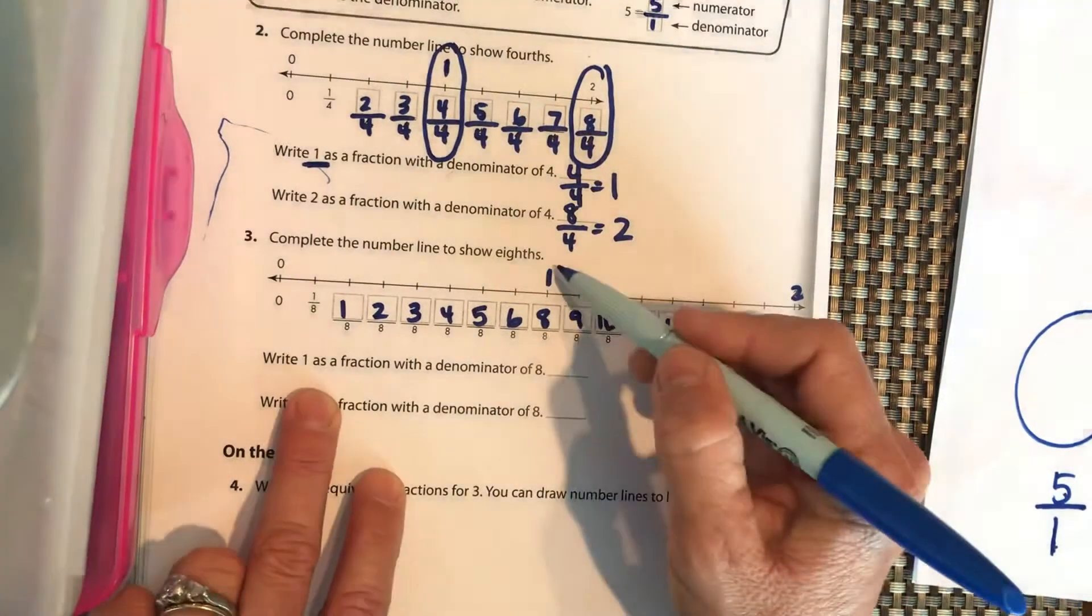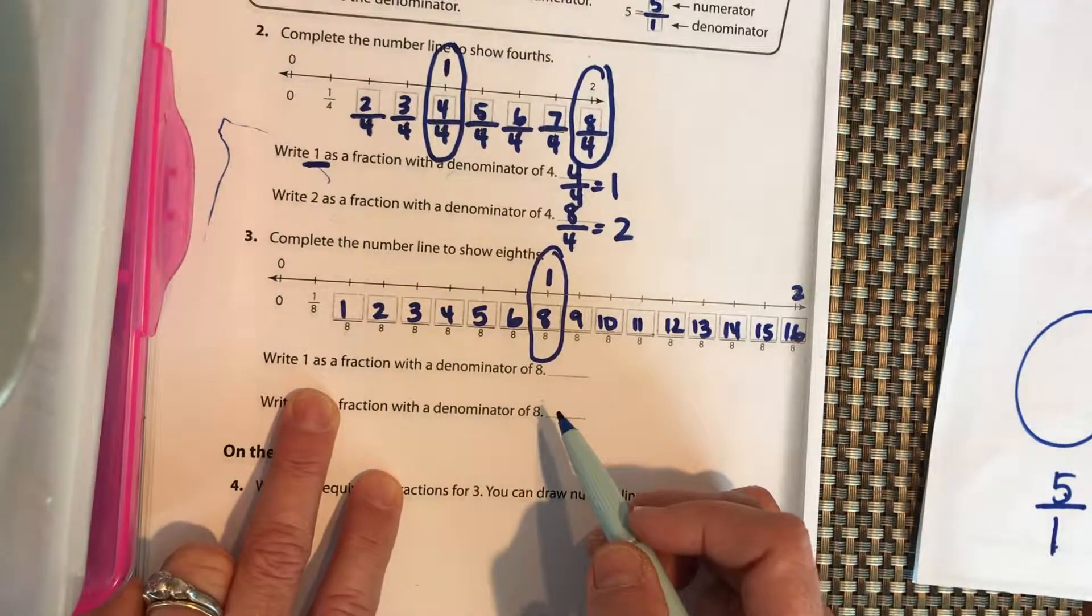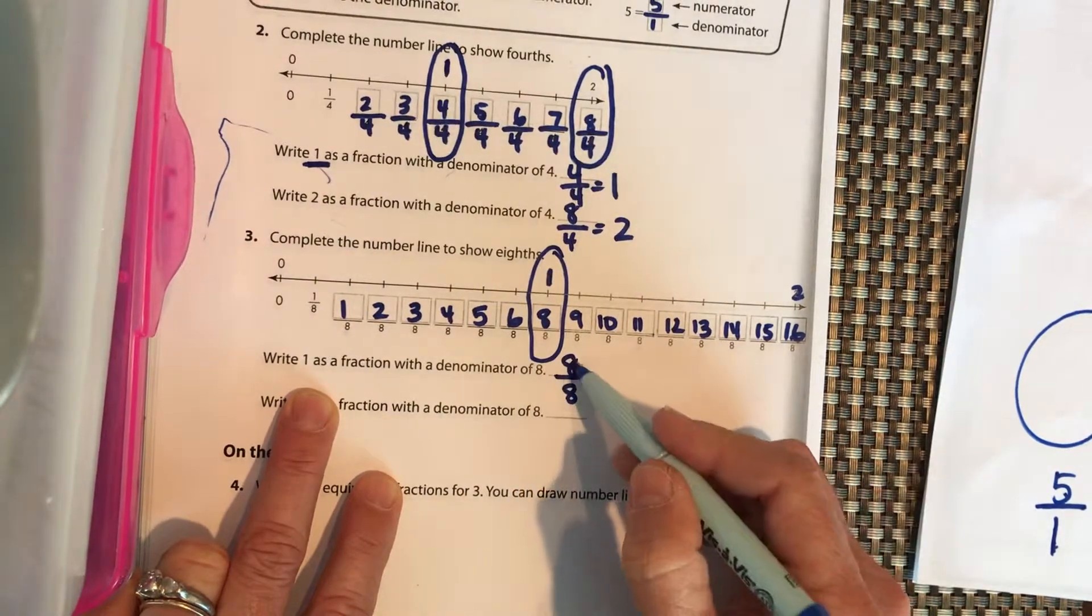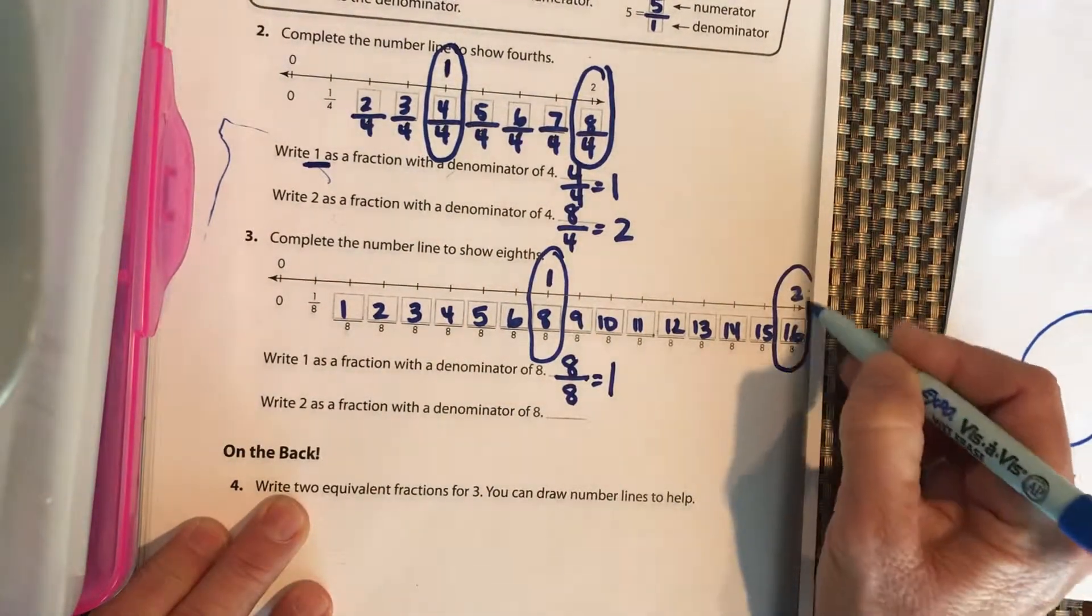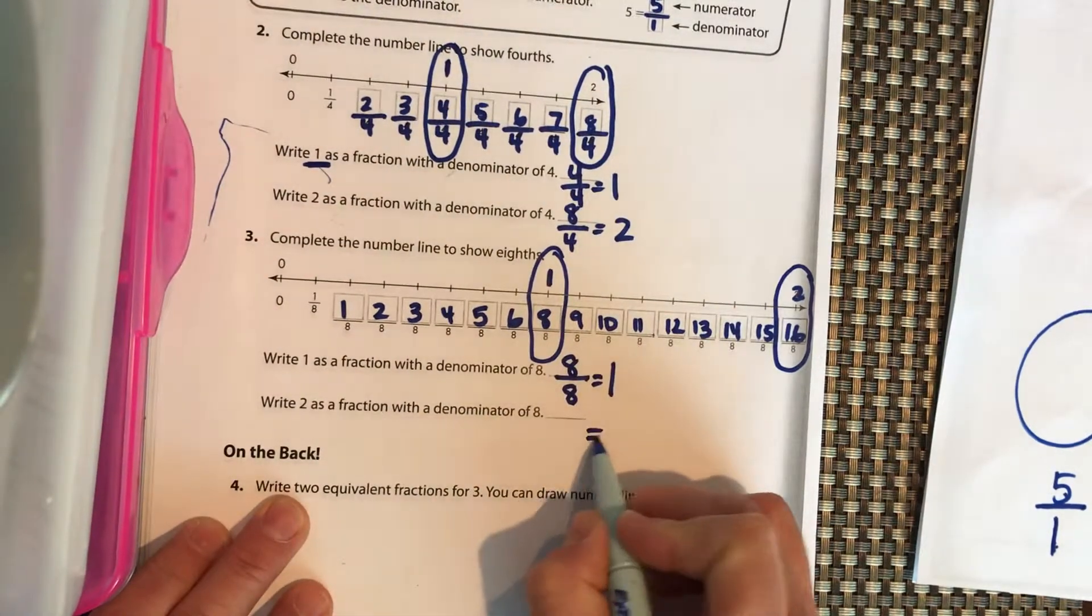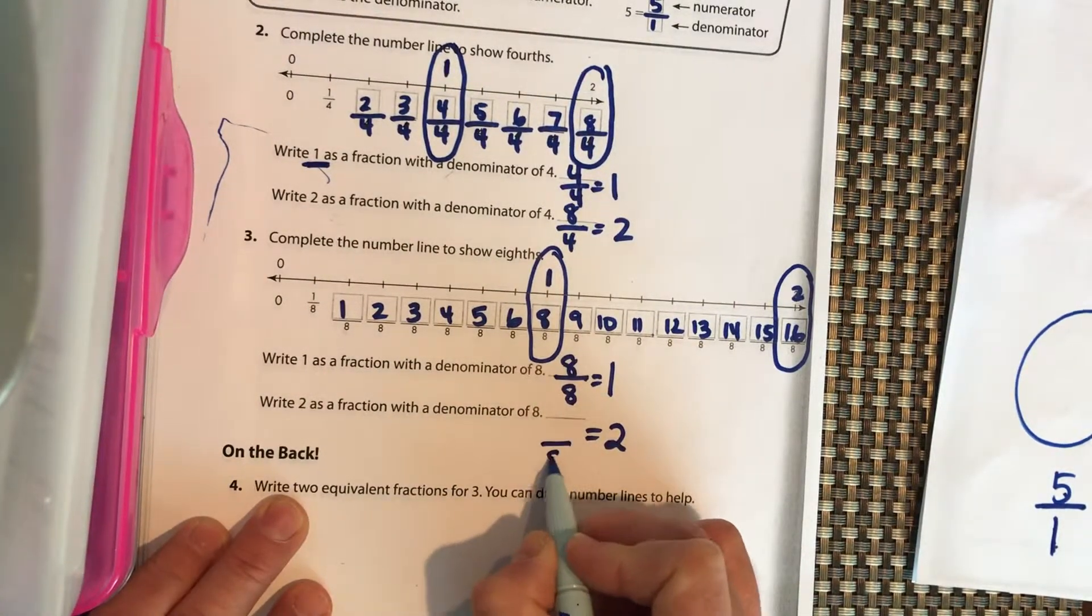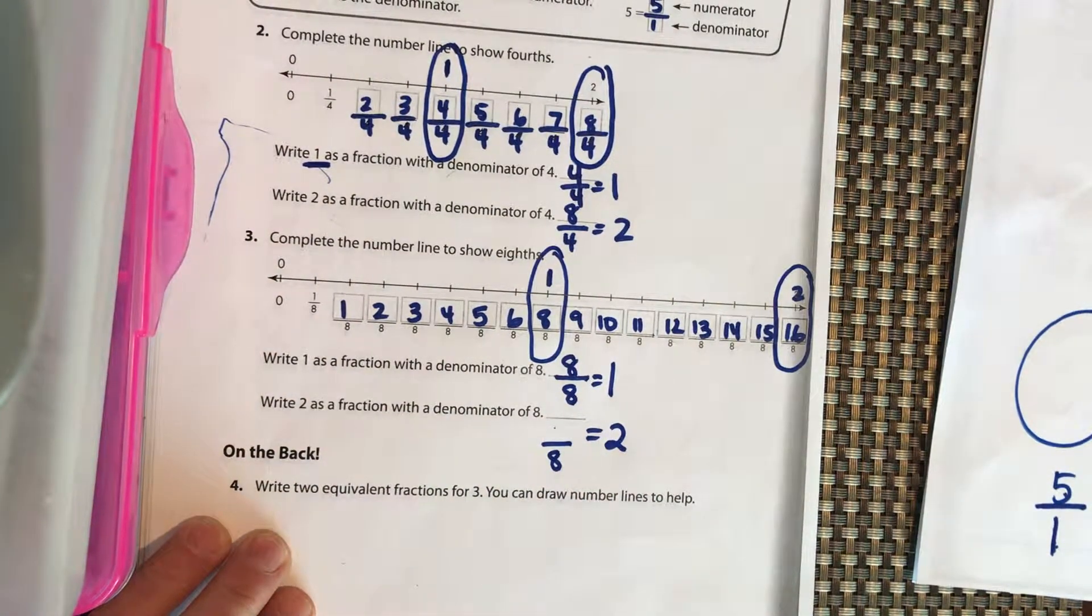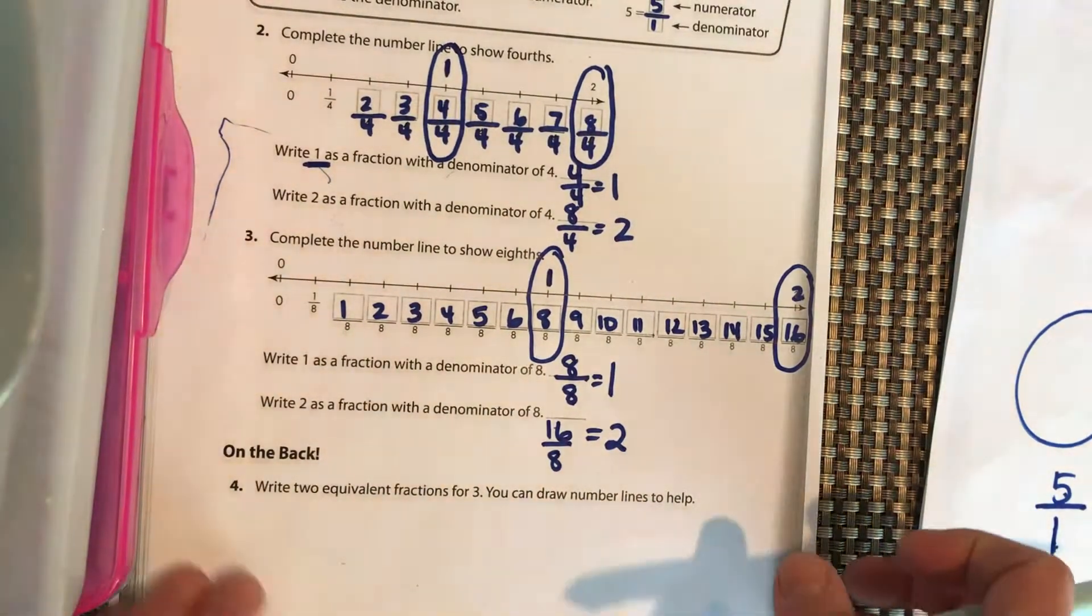Okay, so write 1 as a fraction with a denominator of 8. So denominator is 8. We want the numerator to be 8 because 8 divided by 8 equals 1. Write 2 as a fraction with a denominator of 8. It needs to equal whole number 2 when you're done. The denominator needs to be 8. So what divided by 8 equals 2?